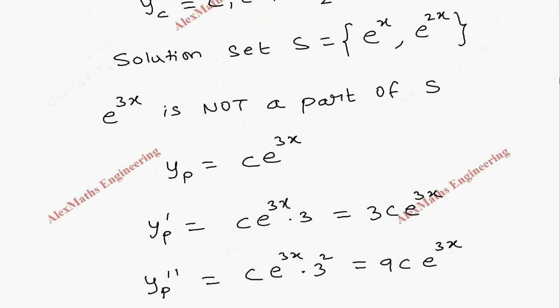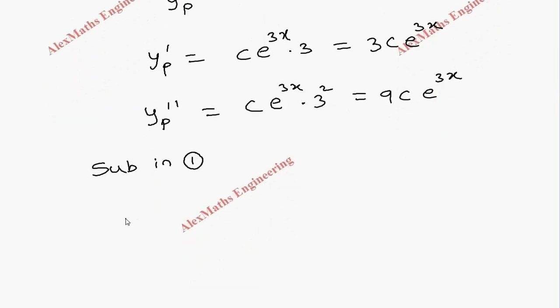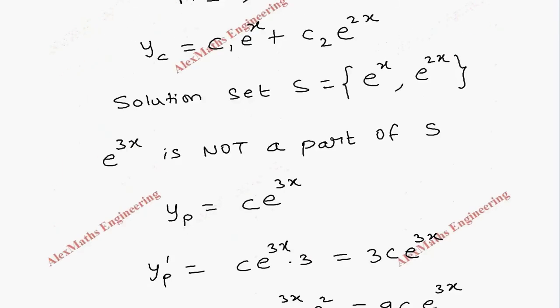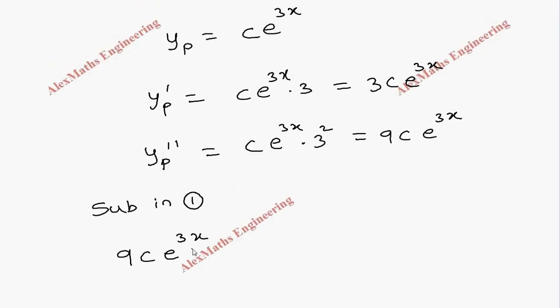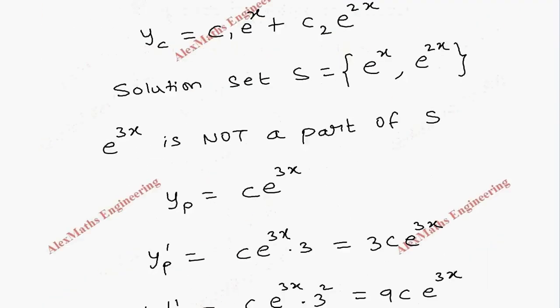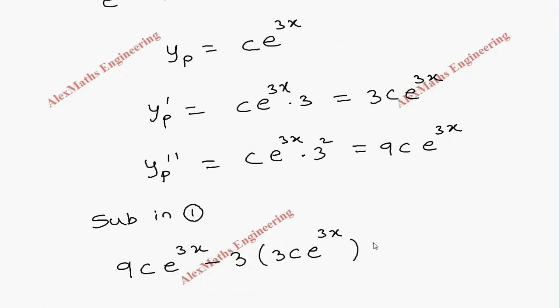Let's substitute all this. For y double dash we have to substitute this second derivative, that is 9ce^3x. Then the second term is -3y', so -3 times 3ce^3x. The last term is +2y, so +2ce^3x.